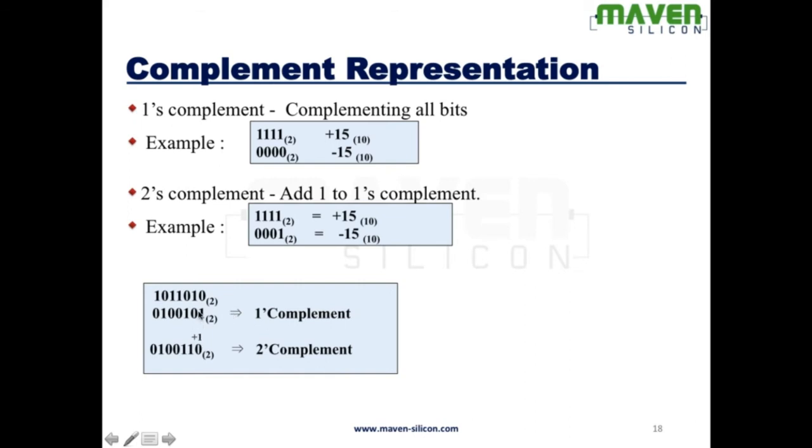And if you add 1 with this 1's complement, what you get is 2's complement like this. So this is how you have to calculate 2's complement. Complement all the bits then add 1. Is there any shortcut? I don't want to follow this method.